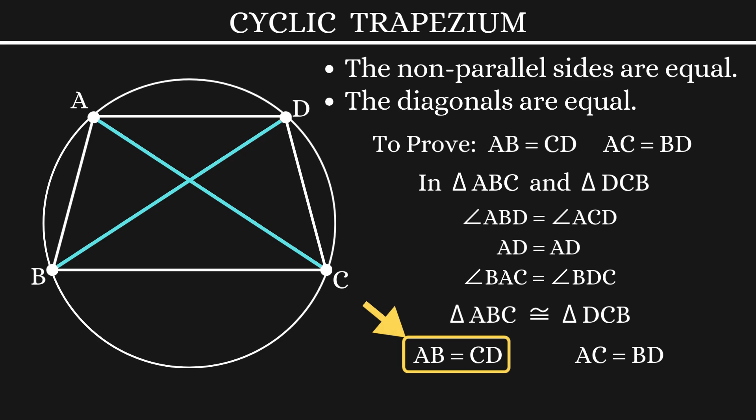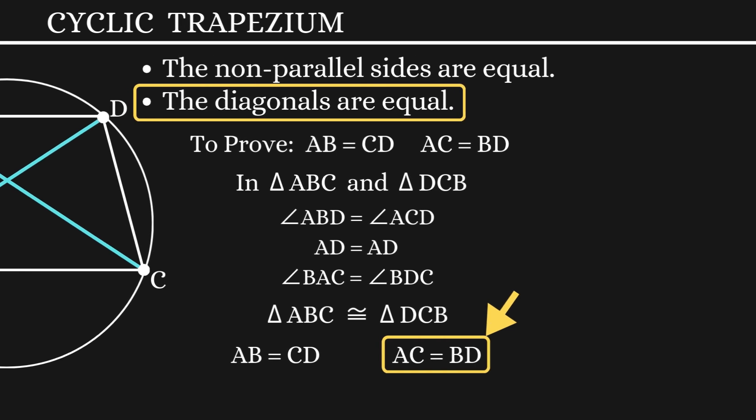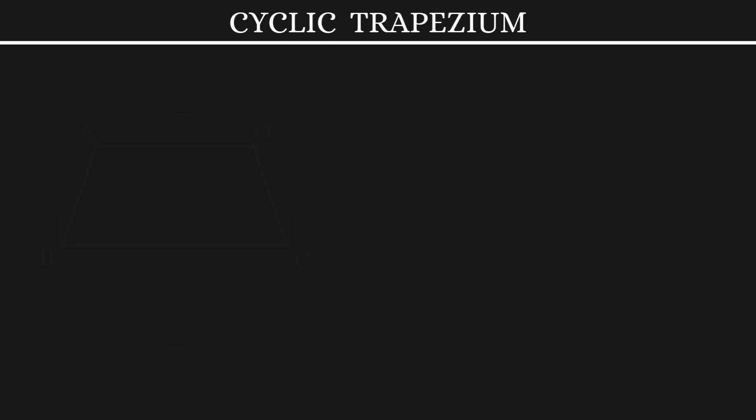This shows that the non-parallel sides are equal and this equation shows that the diagonals are equal. With that, we move on to the final property.